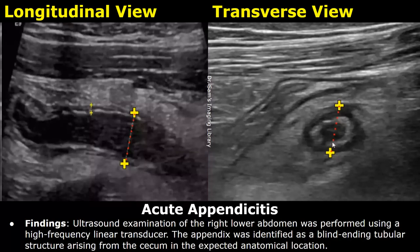These are the findings. Ultrasound examination of the right lower abdomen was performed using a high-frequency linear transducer. The appendix was identified as a blind-ending tubular structure arising from the cecum in the expected anatomical location.